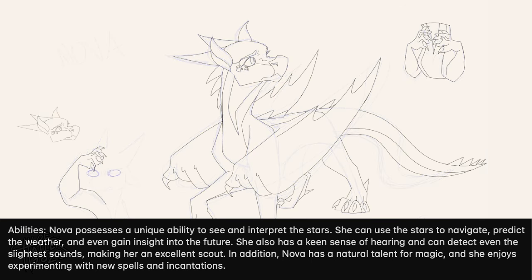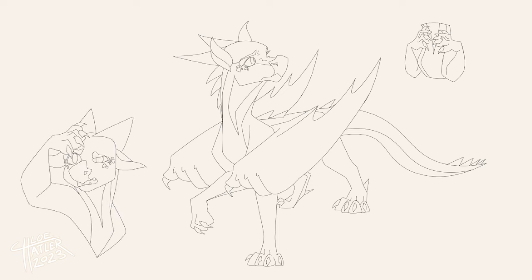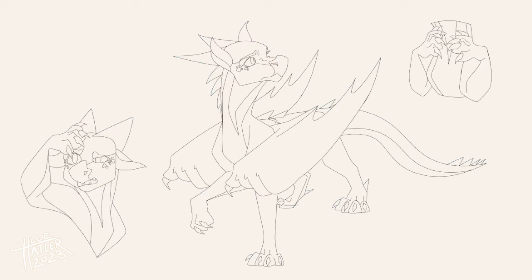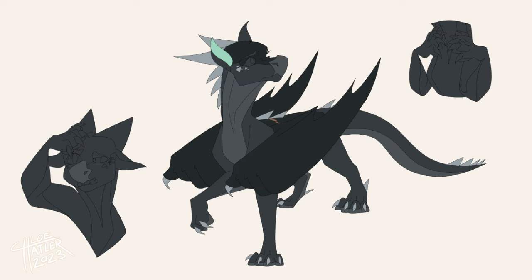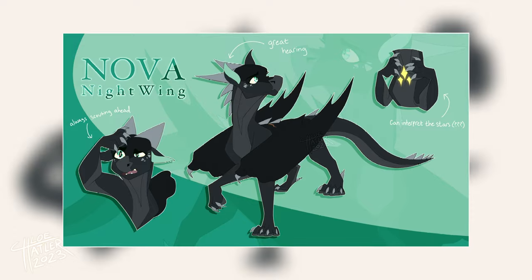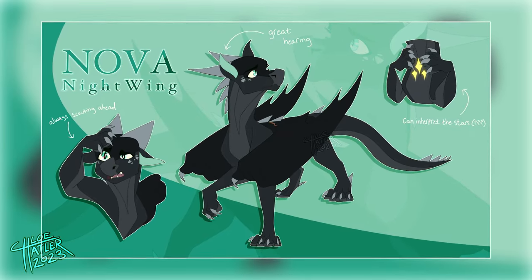Background: Nova grew up in the Nightwing tribe, where she was regarded as one of the most promising young scholars. However, during an attack on her tribe, she was separated from her family and forced to flee into the wilderness. Since then, she has traveled extensively and studied a variety of subjects, from history and politics to astronomy and magic. Abilities: Nova possesses a unique ability to see and interpret the stars. She can use the stars to navigate, predict the weather, and even gain insight into the future. She also has a keen sense of hearing and can detect even the slightest of sounds, making her an excellent scout. She also has a natural talent for magic and enjoys experimenting with new spells and incantations. From what ChatGPT gave me, I came up with the idea that Nova definitely likes to be in charge — she's smart, quick thinking, a great scout, and she knows she should be in charge. She can be distant or aloof, probably thinking about her background and being separated from her family. But she has the strength to keep moving forward, which is why she'd be a great leader.